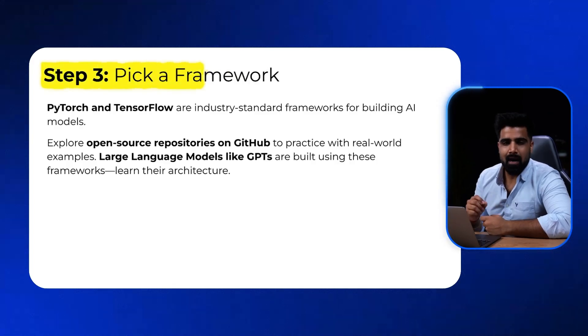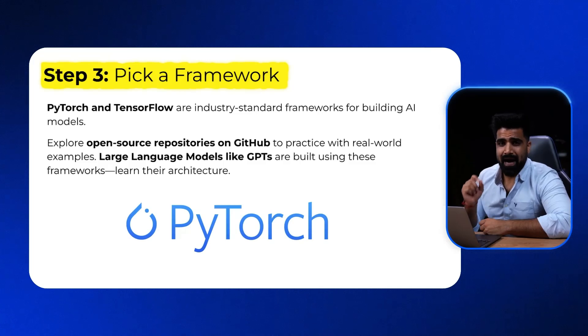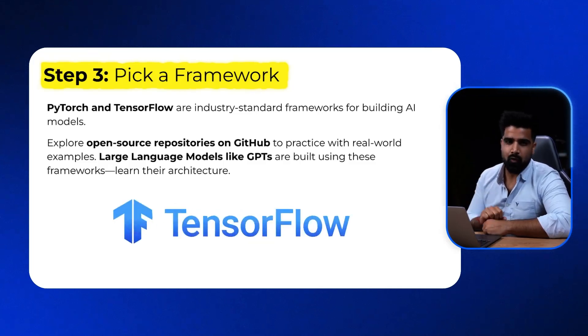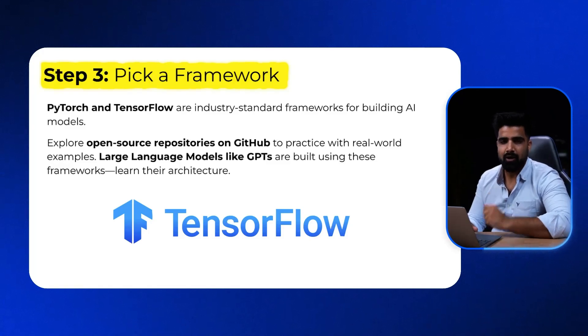Step 3 is to pick up a framework of your choice. You can either pick PyTorch by Facebook or TensorFlow by Google. Both of these are industry-standard frameworks for building your AI models, and you can build your deep neural networks from scratch using either of them.